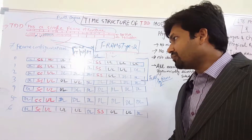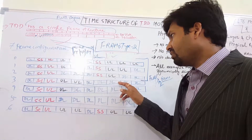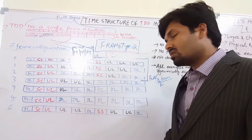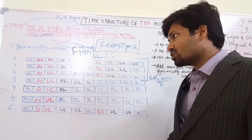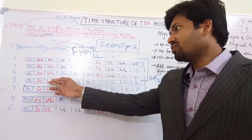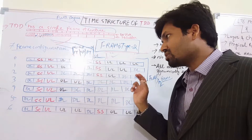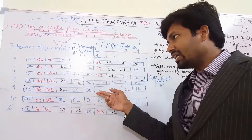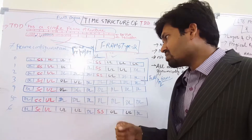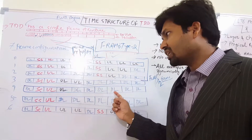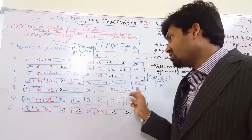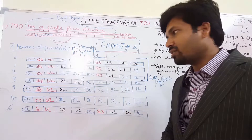In frame configuration type 4, we have 3 uplink subframes, 1 special subframe, and 6 downlink subframes in the first half, and all downlink in the second half. In type 4 overall, we have 2 uplink subframes, 7 downlink subframes, and 1 special subframe.